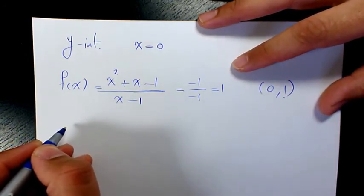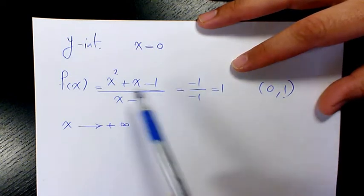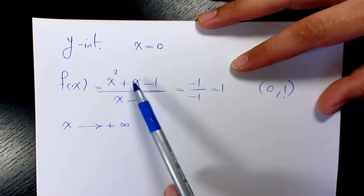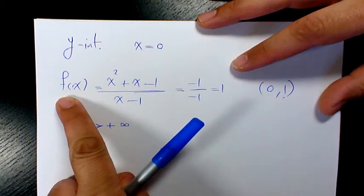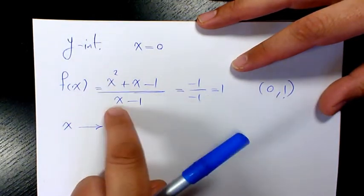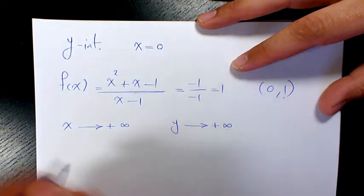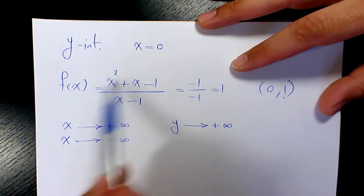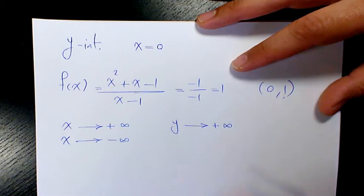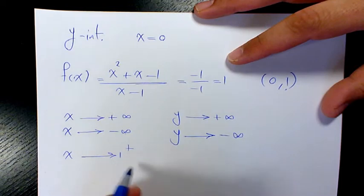Now let's look at the end behavior. When x approaches positive infinity, the degree of the numerator is greater than the degree of the denominator, so f(x) approaches positive infinity — both leading coefficients are positive. When x approaches negative infinity, we get positive infinity divided by negative infinity, so f(x) approaches negative infinity.